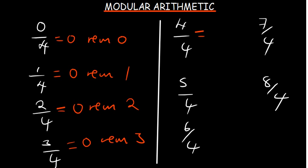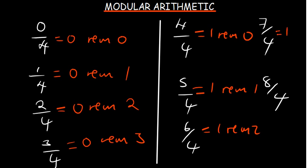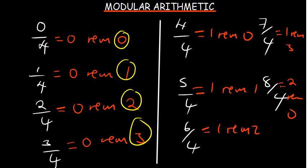4 divided by 4 is 1 with remainder 0; 5 divided by 4 is 1 with remainder 1; 6 divided by 4 is 1 with remainder 2; 7 divided by 4 gives remainder 3; and 8 divided by 4 gives remainder 0. You've seen the trend: the remainders go 0, 1, 2, 3, then 0 again, then 1, 2, 3, and so on.